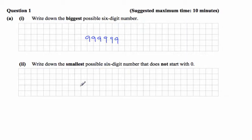Part 2 says write down the smallest possible six digit number that does not start with zero. If it does not start with zero, the next smallest digit is one, but then all the other digits after that can be zero, which is the smallest digit we have. So it's going to be one with five zeros, which is 100,000.